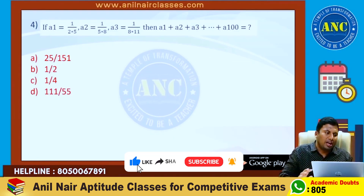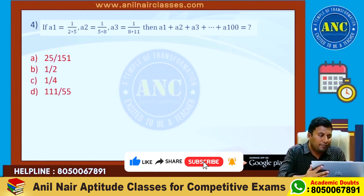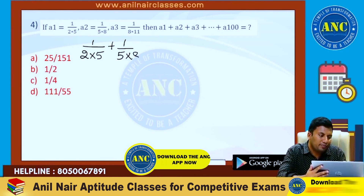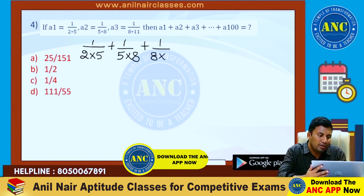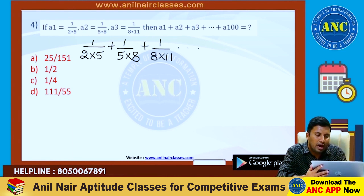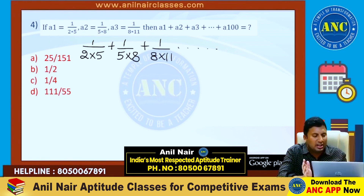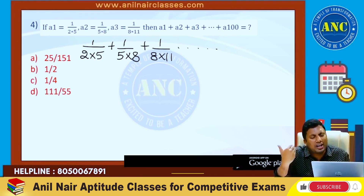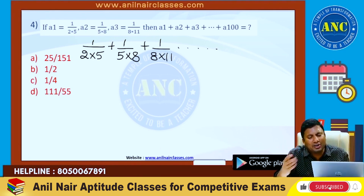Now, another fourth one. If A1 is equivalent to 1 by 2 into 5, next one 1 by 5 into 8, next one 1 by 8 into 11 and so on up to some series is given. I don't want students to find out the A100 value and compute it the long way.